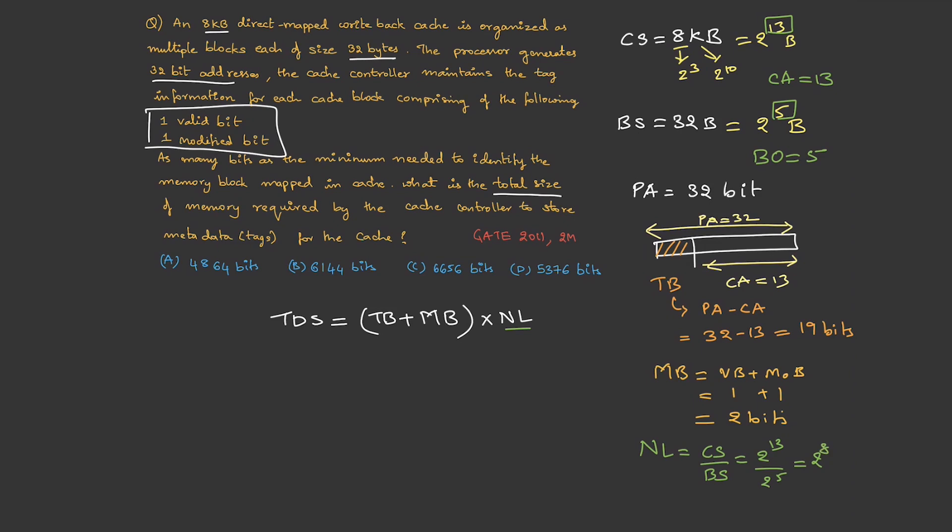Now we have the data, so let's solve this. Tag bits, we have 19. Meta bits, we have 2. Number of lines is 2^8. This is 21 into 256, which is 5,376 bits. Therefore, the answer is option D. Now, before I proceed to the next mapping technique, let me discuss the disadvantages of direct mapping.